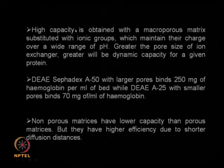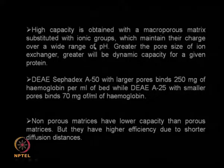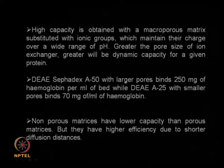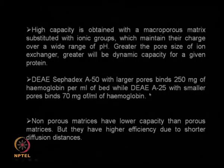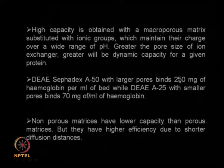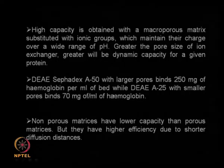To achieve high capacity in an ion exchanger matrix, we can use a highly macroporous matrix and substitute with ionic groups that maintain their charge over a wide pH range. Greater pore size gives greater dynamic capacity for a given protein. For example, DEAE-Sephadex A50 with large pores binds about 250 mg of hemoglobin per ml of bed, whereas A25 with smaller pores binds only 70 mg of hemoglobin per ml.